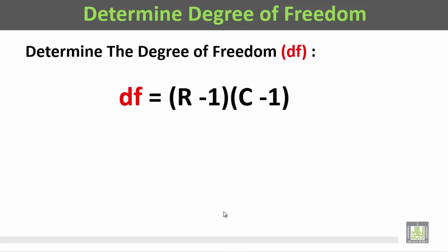The degree of freedom for the chi-square is equal to the number of rows minus 1, times the number of columns minus 1.